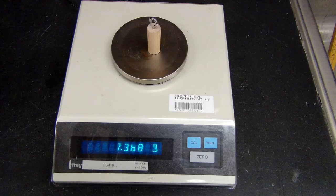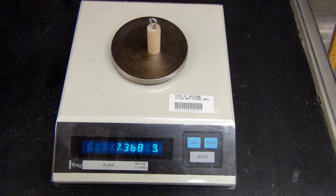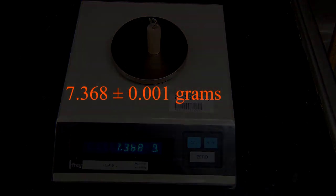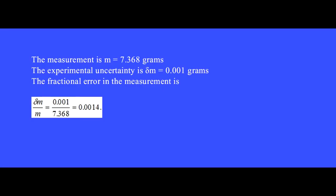On this scale, the last displayed digit occurs in the thousandths place, so we record the measurement as 7.368 plus or minus 0.001 grams. The measurement of this mass is m equals 7.368 grams. The experimental uncertainty is delta m equal 0.001 grams. We use the Greek letter delta to represent this experimental uncertainty.